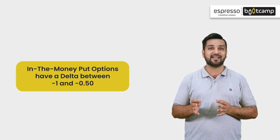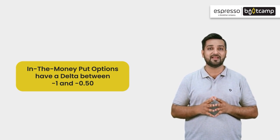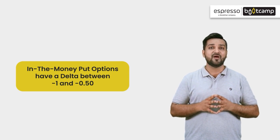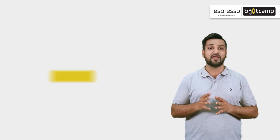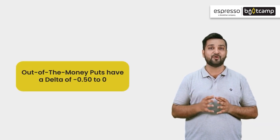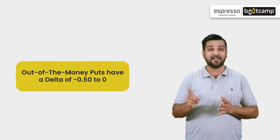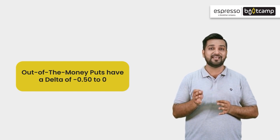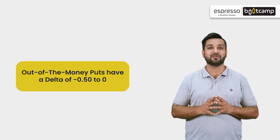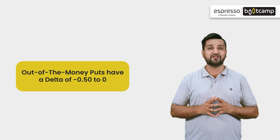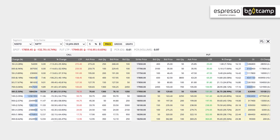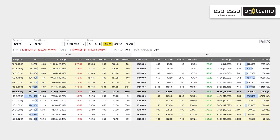Deep in the money put options have a Delta value near minus 1, because they are already in the money. Out of the money put options have a Delta of minus 0.5 to 0 — they have no intrinsic value, which is why they are less sensitive. Deep out of the money puts have a Delta near 0. As you can see in the option chain, in the money contracts have the highest Delta value and out of the money contracts have the least Delta value.